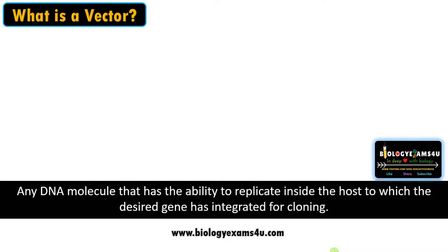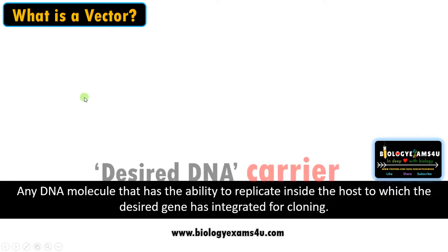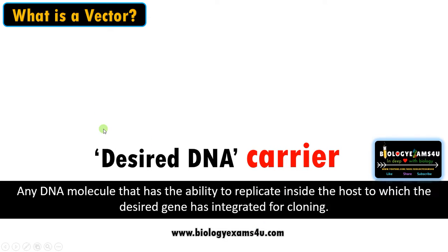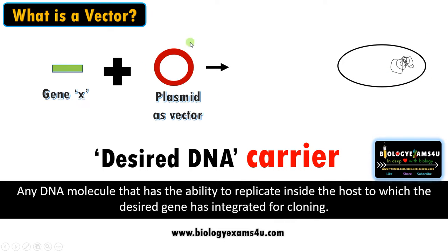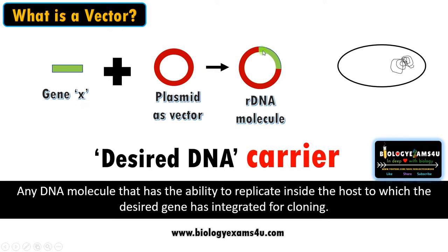A vector is simply a DNA molecule that is capable of replicating inside the host, into which our desired gene is inserted for cloning. It is simply a desired DNA carrier. Suppose we have gene X and we need to transform this gene X into a host bacterium — for that we need a carrier DNA molecule, and that is the vector. The most common vector is plasmid. We make a cut in the plasmid using restriction enzymes and join our desired gene into the vector using ligase, giving us a recombinant DNA molecule that is transferred into the host organism.